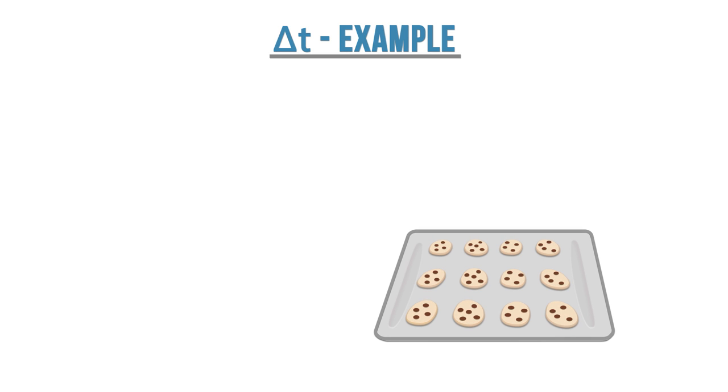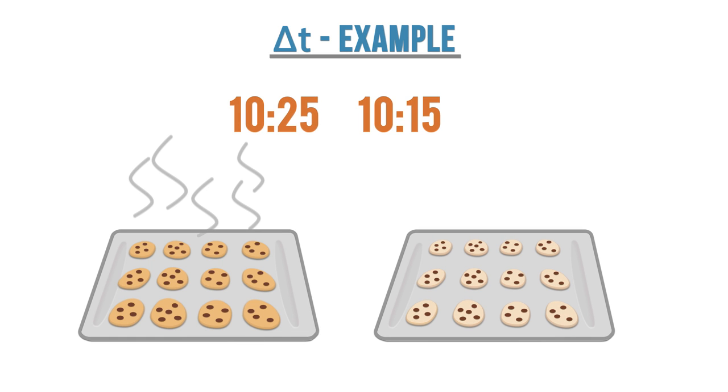Let's walk through an example. If we put a cookie tray in the oven at 10:15 and we took it out at 10:25, then the change in time for this event is the final time, 10:25, minus the initial time, 10:15. The resulting change in time is then 10 minutes.